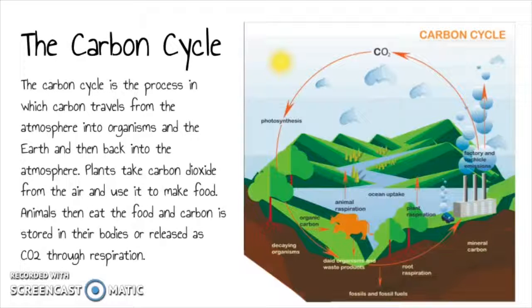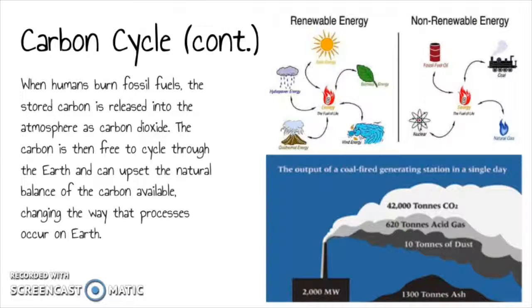The carbon cycle is a process in which carbon travels from the atmosphere into organisms, into the earth, and then back into the atmosphere. Plants take carbon dioxide from the air and use it to make food. Animals then eat the food, and carbon is stored in their bodies or released as CO2 through respiration. When humans burn fossil fuels, the stored carbon is released into the atmosphere as carbon dioxide, and is then free to cycle through the earth, upsetting the natural bounds of available carbon and changing the way that processes occur on earth.